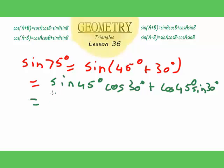And now using our special angles again, we get root 2 over 2 multiplied by root 3 over 2 in brackets, plus root 2 over 2 times half.